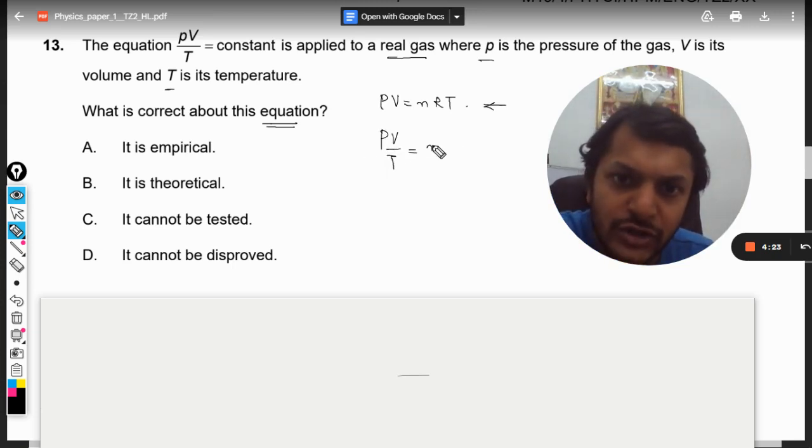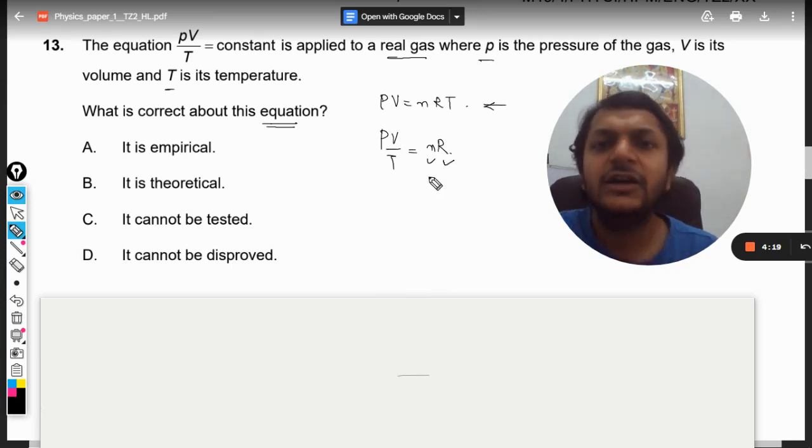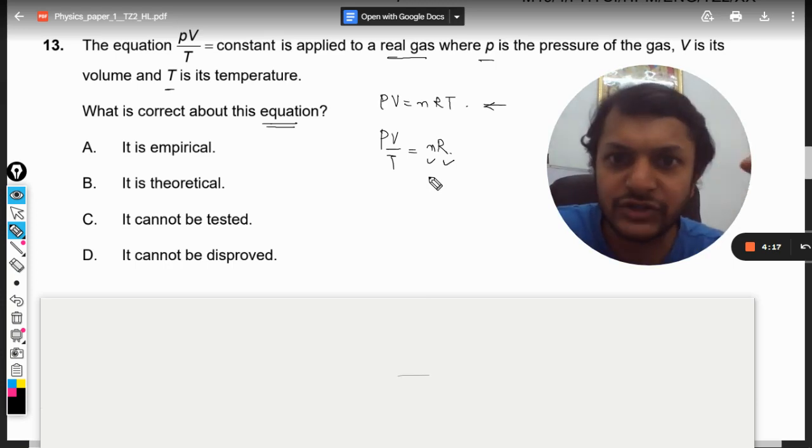So it is saying that PV divided by T is equal to constant. So n into R, obviously number of moles are constant and the universal gas constant is constant, so PV by T should come out to be equal to constant in the case of ideal gas.